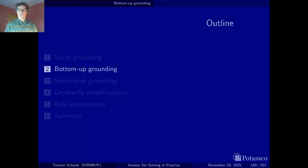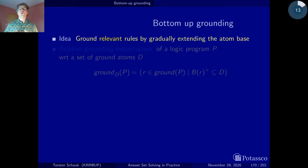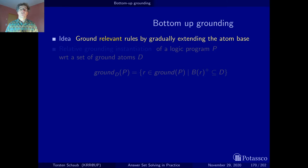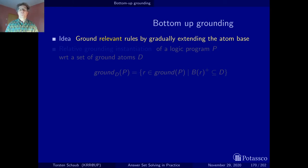The key idea of bottom-up grounding, to avoid the unnecessary rules we have seen in the last section, is to ground only rules that are relevant with respect to a gradually extending atom base. We've already seen the base case when looking at unnecessary rules in our Hamiltonian cycle example, where we had seven facts of the edge predicate and saw that it only made sense to produce rules that used instances of the edge predicate given in the facts. Rules using edge instances not among the facts were redundant because they could never be applied. That's more or less the idea.